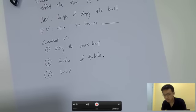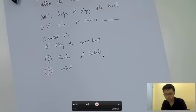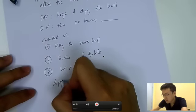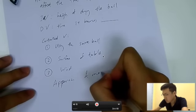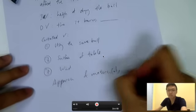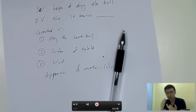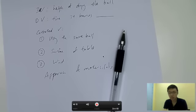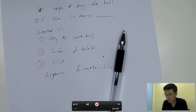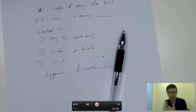For the collection of data, you need to develop a method that allows for the collection of relevant data. First, talk about apparatus and materials. For this experiment you need: a tennis ball, a wooden table, a timer, a ruler, and a measuring stick. The measuring stick allows you to measure the height from which you're dropping the ball.